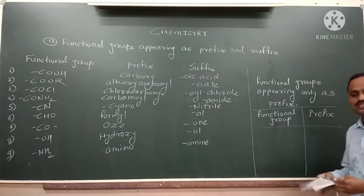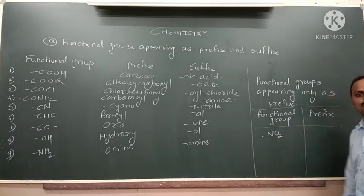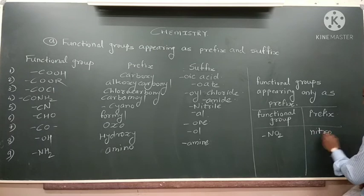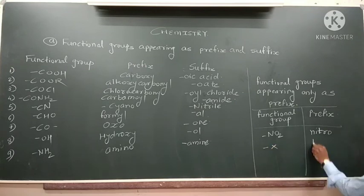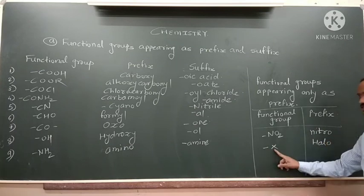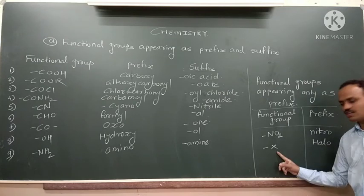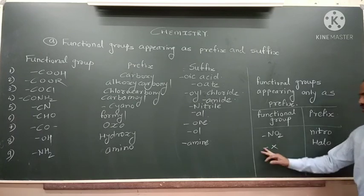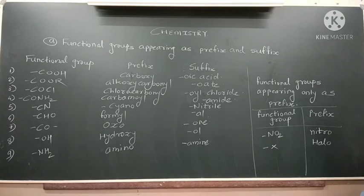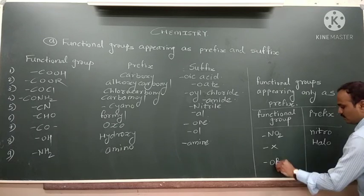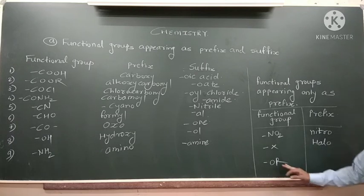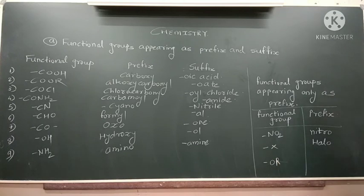Which are these prefix-only groups? First is the nitro group –NO₂, which is always called 'nitro'. Next are the halogens: when fluorine (–F) is present, the prefix is 'fluoro'; for chlorine (–Cl), it is 'chloro'; for bromine (–Br), it is 'bromo'; and for iodine (–I), it is 'iodo'. The last is the alkoxy functional group –OR. When –OCH₃ is present it is 'methoxy', when –OC₂H₅ it is 'ethoxy', and when –OC₃H₇ it is 'propoxy'. These are all called alkoxy.